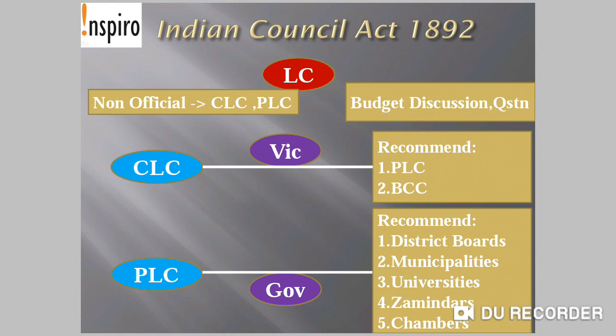Indian Council Act of 1892: Non-official members were allowed in the Central Legislative Council and Provincial Legislative Councils, and their numbers increased. But official members' majority was retained in the Central Legislative Council as well as the Provincial Legislative Councils. So these Legislative Councils now got more power.